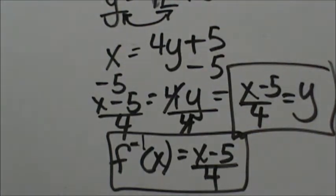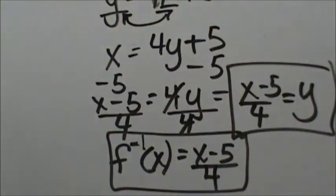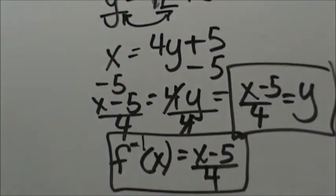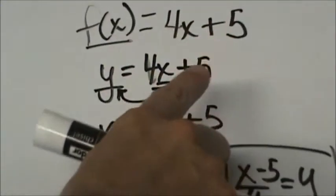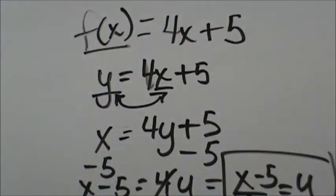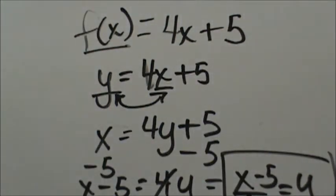Now to check it — that's what we're going to do tomorrow. What you would do is take this inverse function and plug it back into the original function for x, then solve and simplify and see what you get. You should simplify down to simply the value x, and that would confirm your inverse function. Checking it would be the last step.